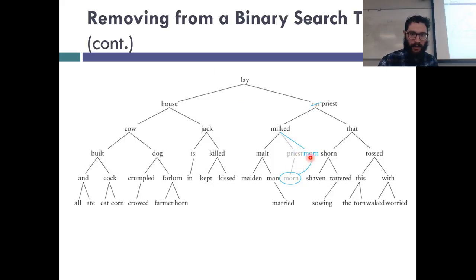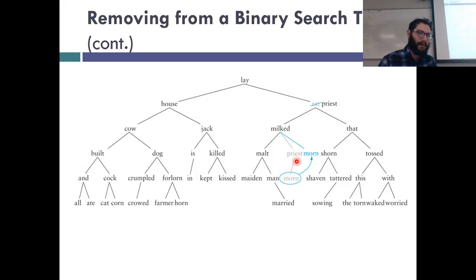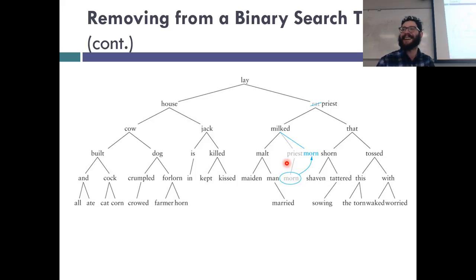Here we're deleting 'house.' We went one to the left, all the way to the right, found 'horn,' so we replace 'house' with 'horn.' In code, we copy the data over and then delete the original node. For deleting 'rat,' we went one left and all the way right to find 'priest,' which was the biggest item in that subtree. But 'priest' had a child — 'more.' When deleting a node with two children, the replacement node is either going to have no children or one child — never two, because if it had two you could go one more to the right.